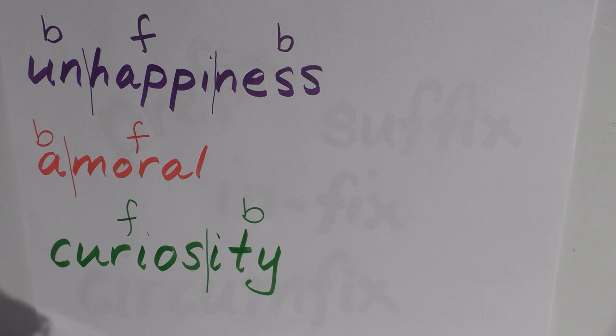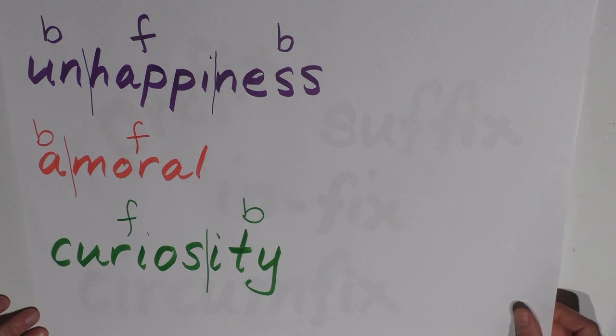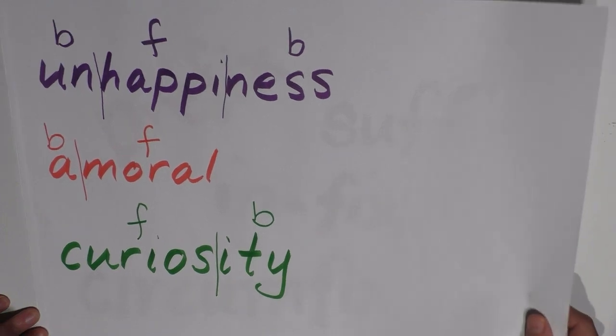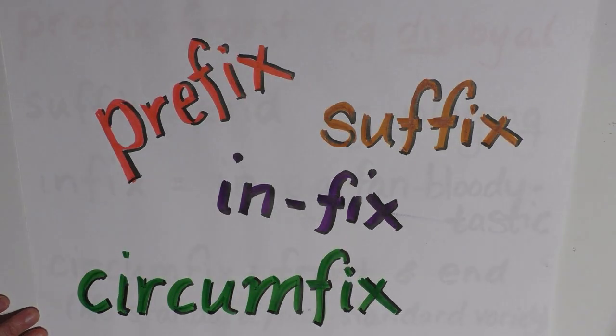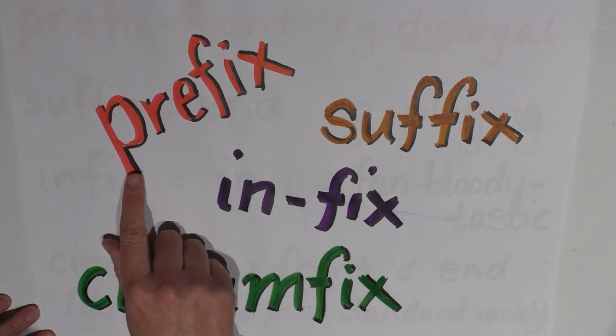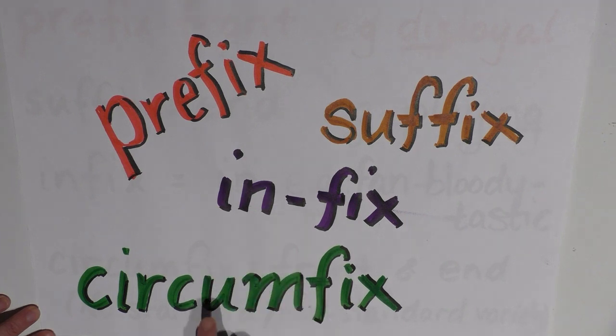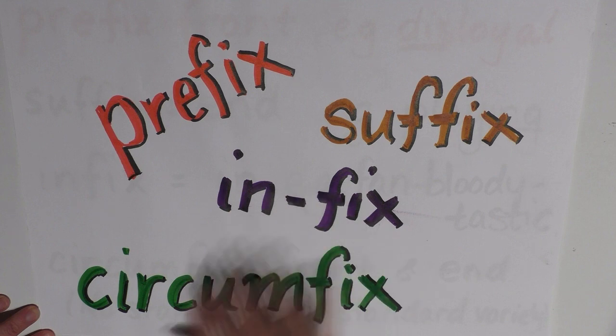We're going to be talking about affixes now. There are four different types of affixes. All these affixes are bound morphemes—they all have to attach to a free morpheme for them to exist as affixes. The different types of affixes are: the prefix, the suffix, the infix, and the circumfix. I'm hoping that from your knowledge of prefixes and things, you could almost figure out which one is which. But I'm going to go through them with you anyway, just in case.